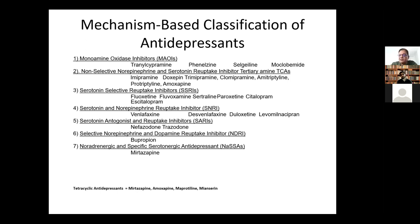The most serious and potentially lethal effect of TCAs is QTc prolongation, which can result in torsades de pointes and sudden cardiac death. There have been hundreds of thousands of reported cases, and many more went unnoticed - patients died from sudden cardiac death and people thought it was a natural cardiac arrest. So these tertiary amine tricyclic antidepressants, despite being another robust class of antidepressants, never became popular.